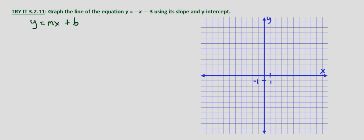Where m is the slope and b is the y-intercept. Now thankfully with our given equation we have y equals negative x minus 3.